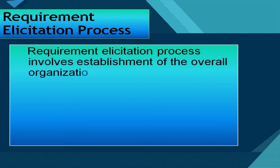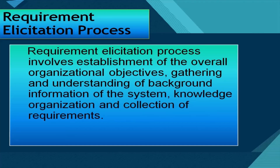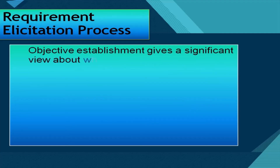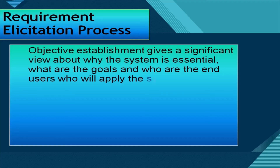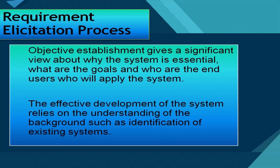The requirement elicitation process involves the establishment of overall organizational objectives, gathering and understanding of background information of the system, and knowledge organization and collection of requirements. The requirement elicitation process gives a significant view about why the system is essential, what the goals are, who the end users are, and who will apply the system. The effective deployment of the system relies on understanding background information such as the identification of existing systems.